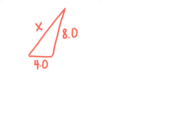Let's see if X equals five. If I add these two sides, five and four, that's nine — that's bigger than the third side, so that would definitely work. Let's try a different number — maybe three. If I add four and three, that's seven. That is not bigger than the third side, so that side would not work.